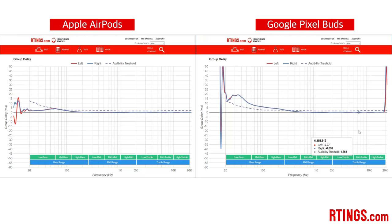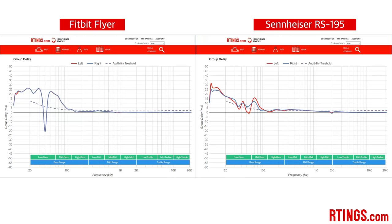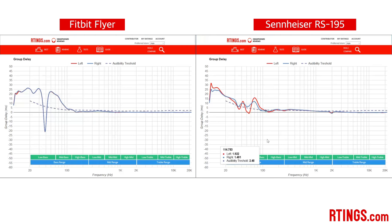We have noticed that some Bluetooth headphones exhibit that 20 kHz group delay jump. Now here are two other headphones that don't do too well with group delay: on the left the Fitbit Flyer and on the right the Sennheiser RS195. Both of these headphones have large group delay in the bass range, which doesn't make for great bass performance.